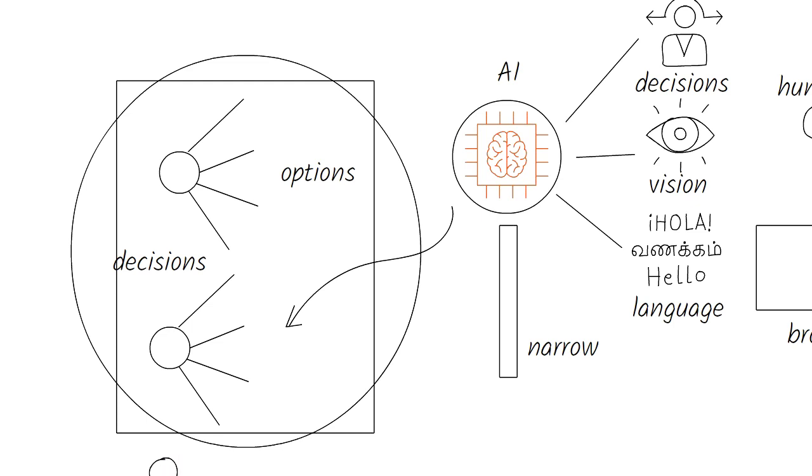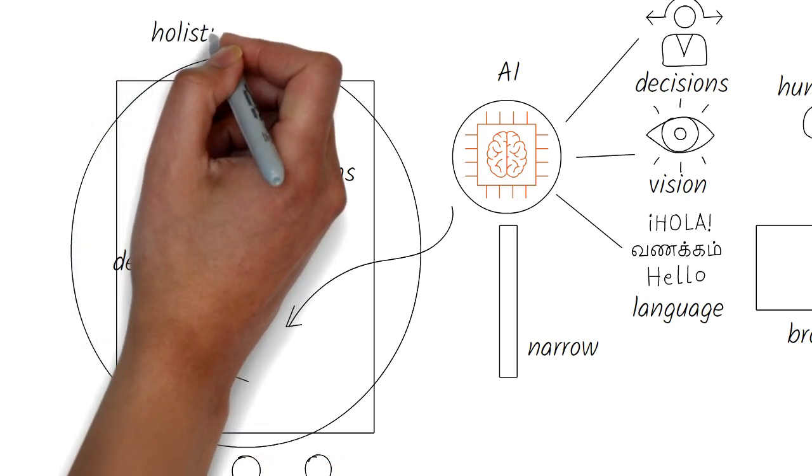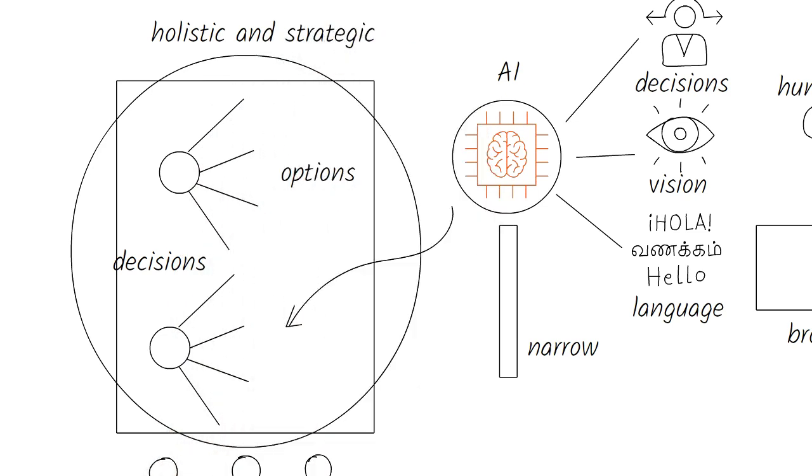To make those good choices, executive leaders in the CPG and other supply chain industries have much to consider. To develop a comprehensive, holistic, truly strategic view of AI, here are a few questions that they'll have to seek answers to.